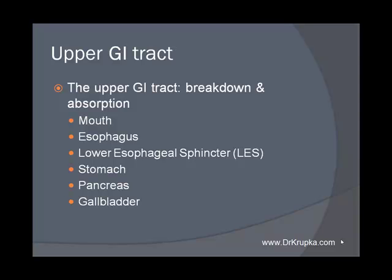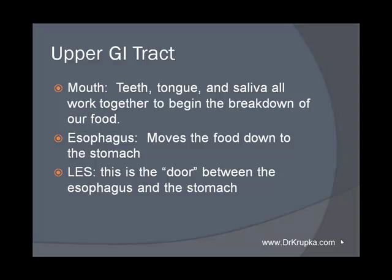First, the upper gastrointestinal tract. The upper GI tract is responsible for breakdown and absorption. It consists of the mouth, the esophagus, the lower esophageal sphincter, the stomach, the pancreas, and the gallbladder. We're going to go over each of these in a little more detail.